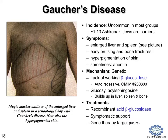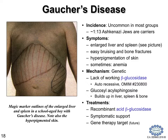Even more common is Gaucher's disease, where the incidence is one in 13 of Ashkenazi Jews who are carriers. It results in an enlarged liver and spleen and many ramifications of this. It is due to a defect in beta-glucosidase and the buildup of glucosylceramide. For this disease, recombinant beta-glucosidase is a possible treatment because enzyme replacement therapy can get to the site of action.